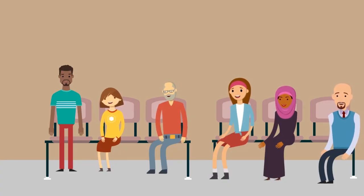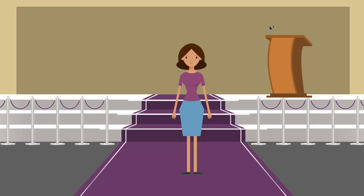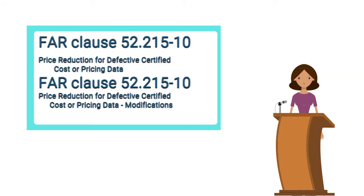In the case of a contractor that knew they were submitting cost or pricing data that were incomplete, inaccurate, or not current, the government is also entitled to a penalty equal to the amount of any overpayment. The contractual vehicle for implementing TINA is the Price Reduction for Defective Certified Cost or Pricing Data Clause, and the Price Reduction for Defective Certified Cost or Pricing Data Modifications Clause.